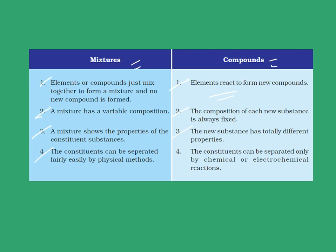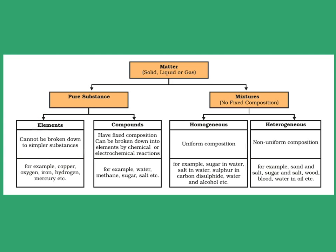Matter can be divided into pure substances and mixtures. Pure substances can be further divided into elements and compounds. Elements cannot be broken down into simpler substances; examples include copper, oxygen, iron, hydrogen, mercury, etc. Compounds have a fixed composition and can be broken down into elements by chemical or electrochemical reactions; examples include water, methane, sugar, and salt. Mixtures can be further subdivided into homogeneous and heterogeneous.